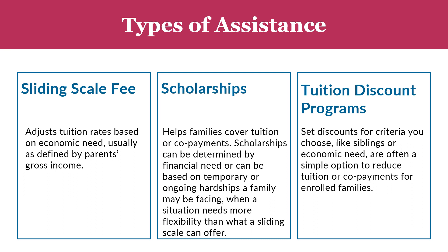Scholarships are another way of offering financial assistance and can be determined based on a variety of criteria. You could use financial need as your determining factor, which can be useful for families experiencing either a temporary need or an ongoing financial hardship. Scholarships can be useful when financial need is difficult to determine, such as a family dealing with medical bills or a temporary job loss, or when a situation needs more flexibility than a strict sliding scale can offer. Discounts present a third option based on the criteria you choose — you could offer discounts to siblings in your program, to children of military families or teachers, or discounts based on financial need, such as 25% off their copay for families below 85% of SMI.